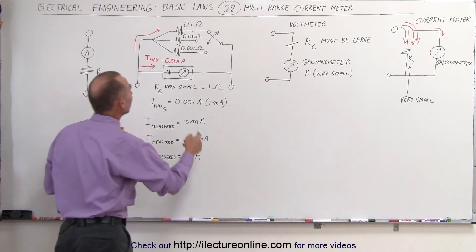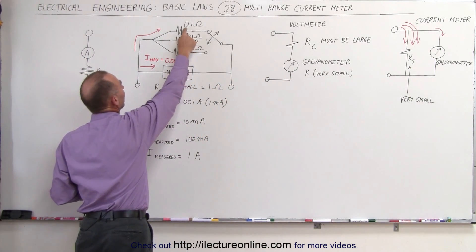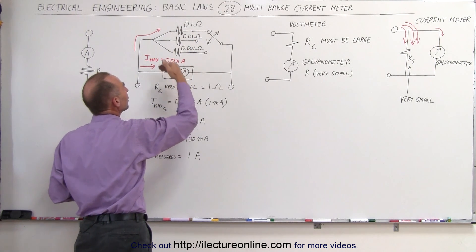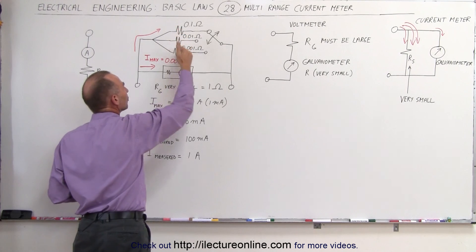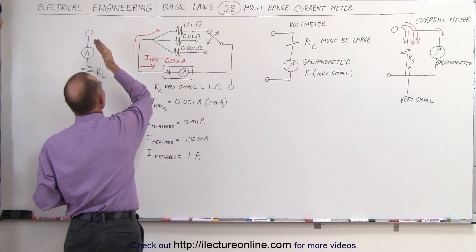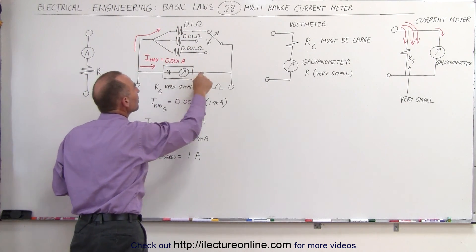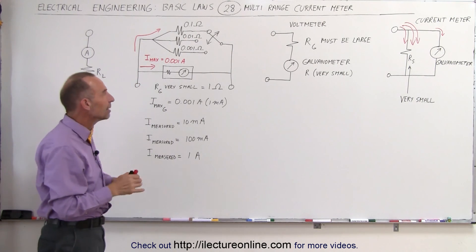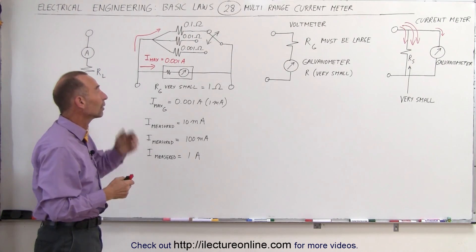So all we have to do is put in a resistor that is about one-tenth the resistance of the galvanometer, it will carry, therefore, ten times as much current, and therefore we can measure a ten milliamp current with only one milliamp going through the galvanometer. Now, that's not exactly the amount that we need, because let me show you what that means.